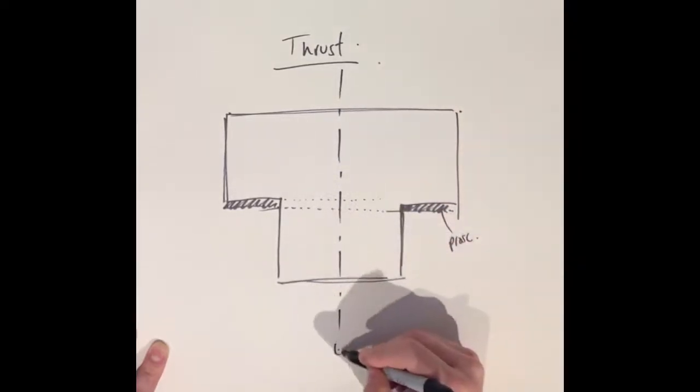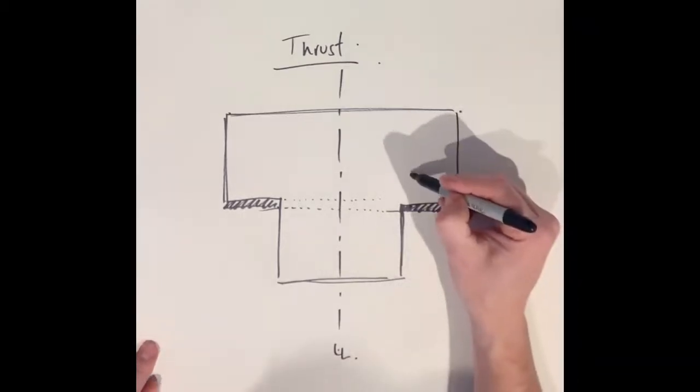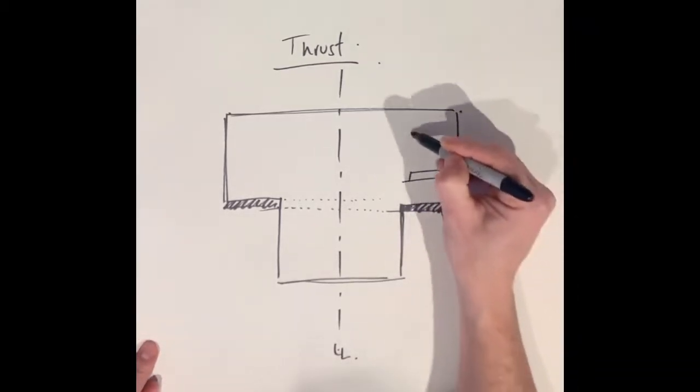For reference point I'm adding in a center line using dot dash dot dash and labeling it CL. This gives me stage left and stage right.